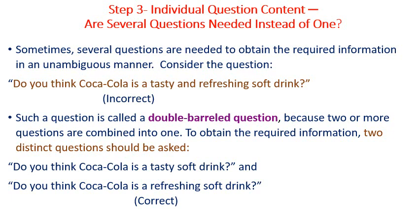It includes two qualities — tasty and refreshing — so such a question is called a double-barreled question, because two or more questions are combined into one. To obtain the required information, two distinct questions should be asked: 'Do you think Coke is a tasty soft drink?' and 'Do you think Coke is a refreshing soft drink?' Those are the correct questions.